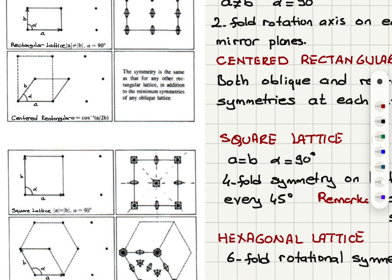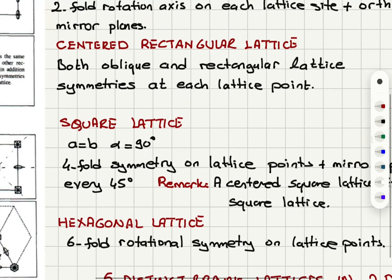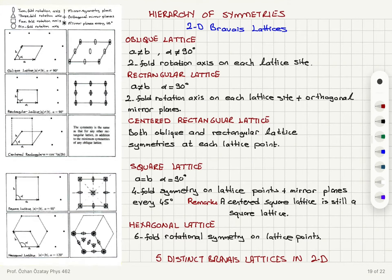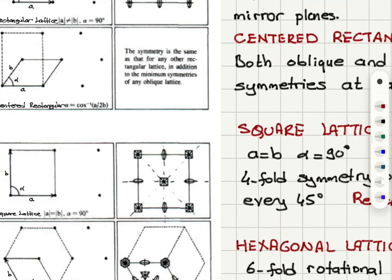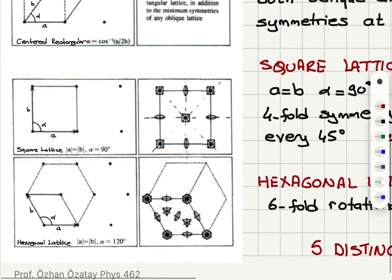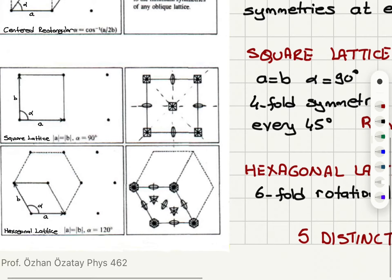In the square lattice, a equals b and alpha equals 90 degrees. We have fourfold rotational symmetry on lattice points and mirror planes at every 45 degrees. If you put another lattice point in the middle, a centered square lattice would still be a square lattice, so that is not a distinct lattice. On lattice sites we have fourfold rotational symmetry and 45-degree mirror planes.